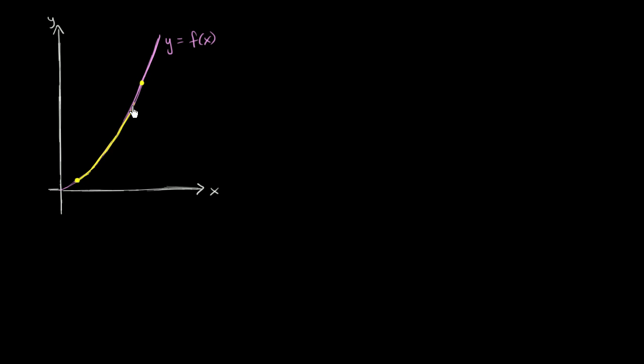But instead we want to find the distance along the curve. If we were to lay a string along the curve, what would be this distance right over here? That's what I'm talking about by arc length. We could think about it as, okay, well that's going to be from x equals a to x equals b along this curve. So how could we do it?